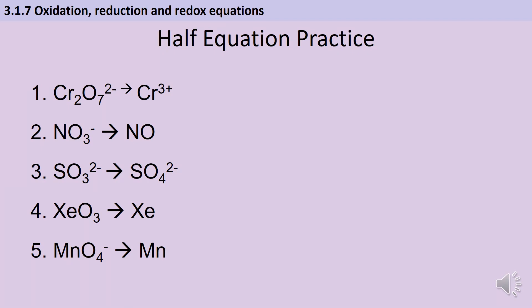First a recap of writing half equations. For each one of these questions remember you're going to need to identify which element is changing oxidation state, balance that element, add the relevant number of electrons to make the charges work, then look for changes in the amount of oxygen and add water, and finally add hydrogen ions to make sure that it all balances. If you double check you should have the same overall charge on both sides.